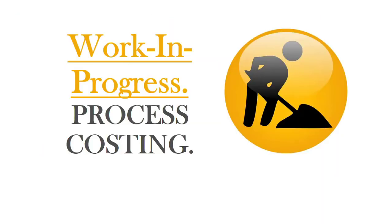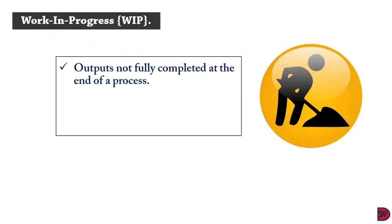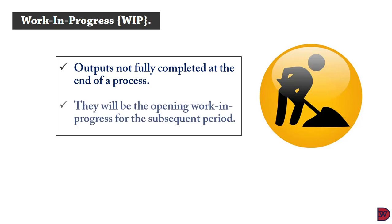Work in progress in the process costing discussion — these are outputs that are not completed at the end of the production process. They will be the opening work in progress for the subsequent period, so the closing work in progress for 2021 will be the opening for 2022.